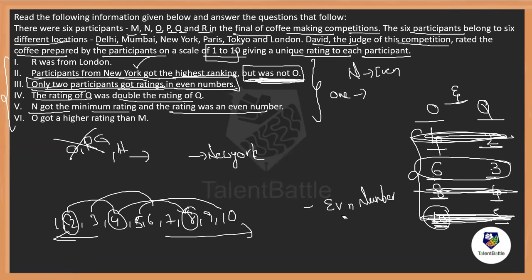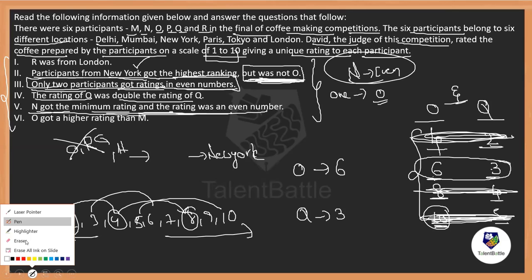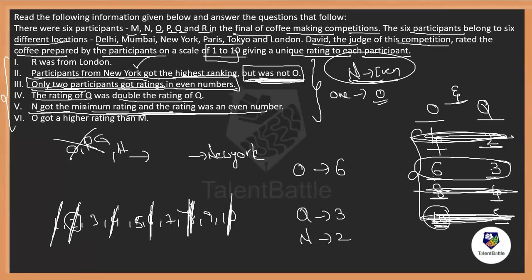The only valid possibility is Q=3 and O=6. N got the minimum rating and it is even — the minimum even number remaining is 2, so N=2. Now six and two are used; no other even number can be used since only two participants are even. The remaining values are 1, 3, 5, 7, 9 — but 1 is excluded since N holds the minimum at 2. So remaining are 5, 7, and 9.